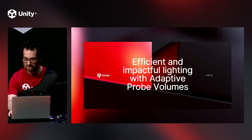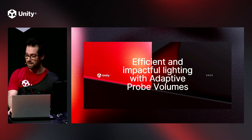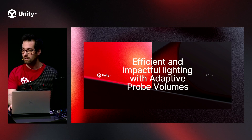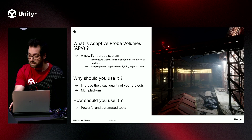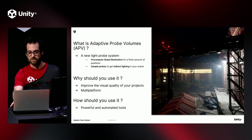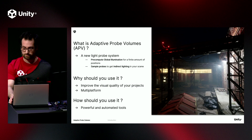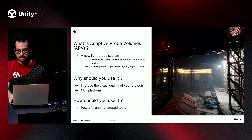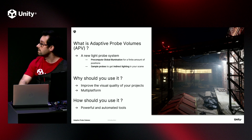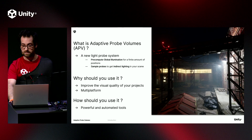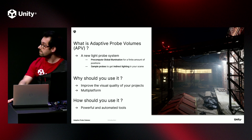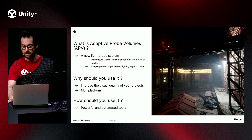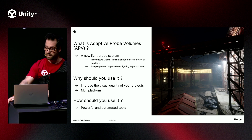Hey, I'm Maxime, and today I'm going to talk about a new adaptive probe volume feature, also called APV. So what is it? When lighting virtual environments, we can use several techniques to compute global illumination. But for high quality and high performance, one of the solutions is to precompute indirect lighting and store data in either light maps or light probes. APV is the new light probe system. It's working on both URP, HDRP, and many platforms from mobile to high-end PC.